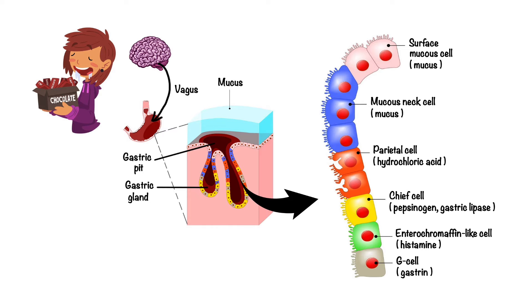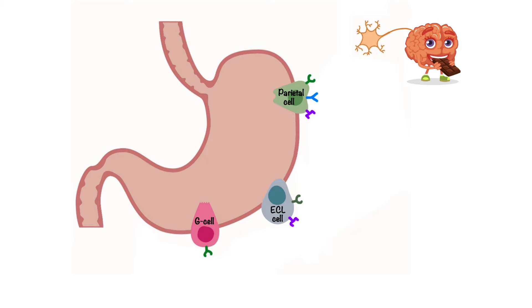The vagus nerve is the single neural link between the brain's higher functions and gastric secretion. In response to food intake, the vagus nerve becomes excited and begins to release acetylcholine.